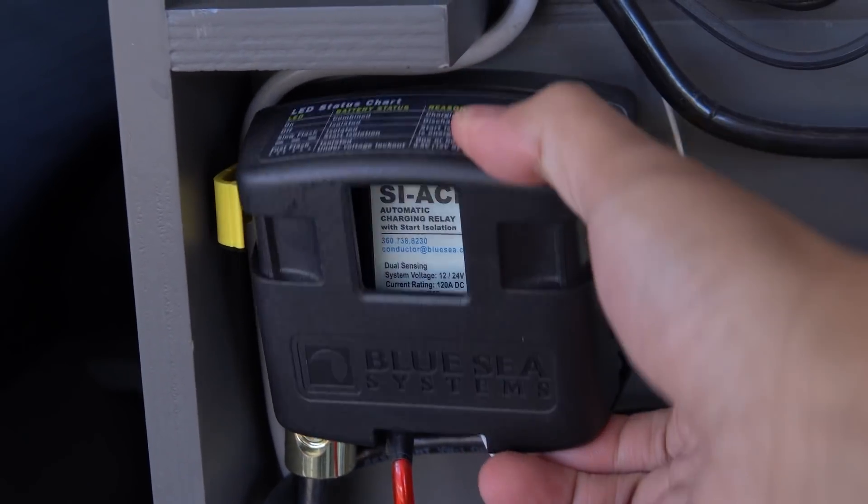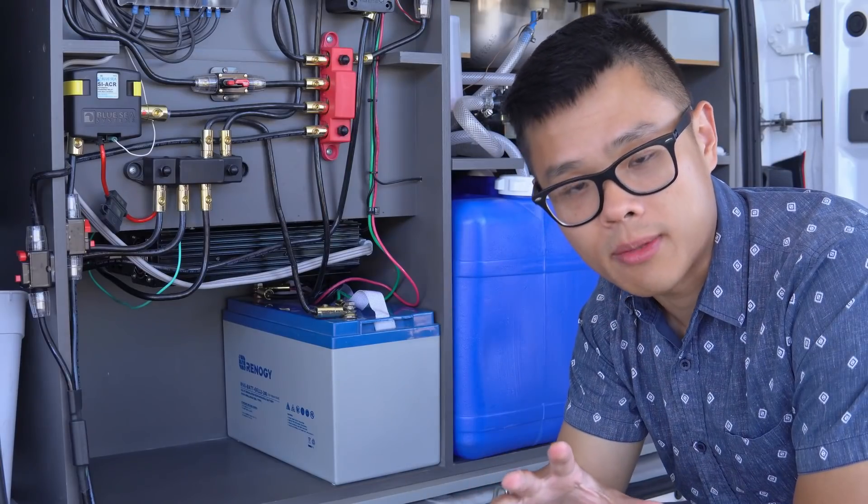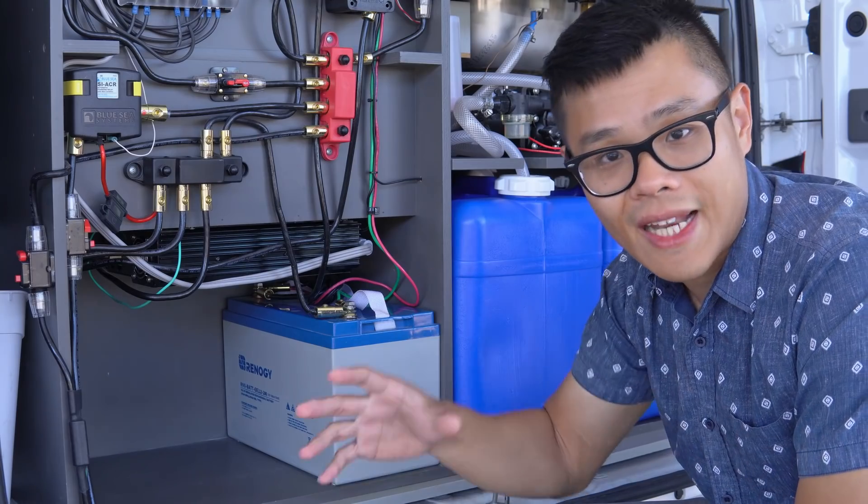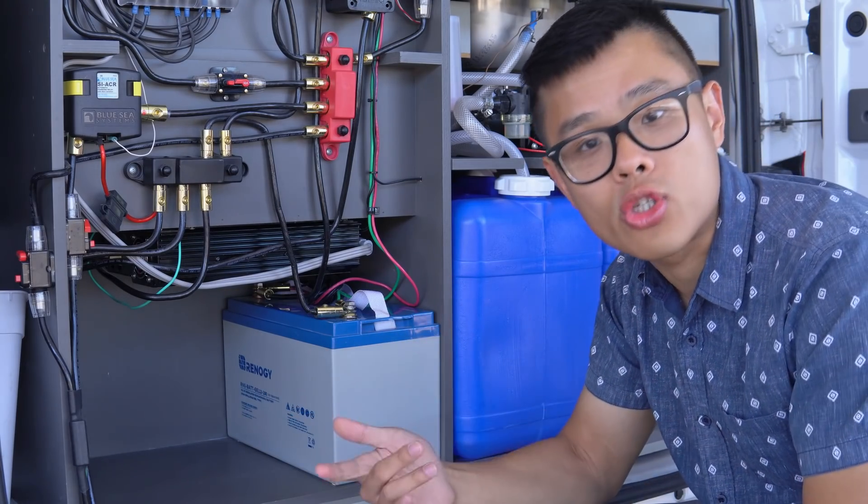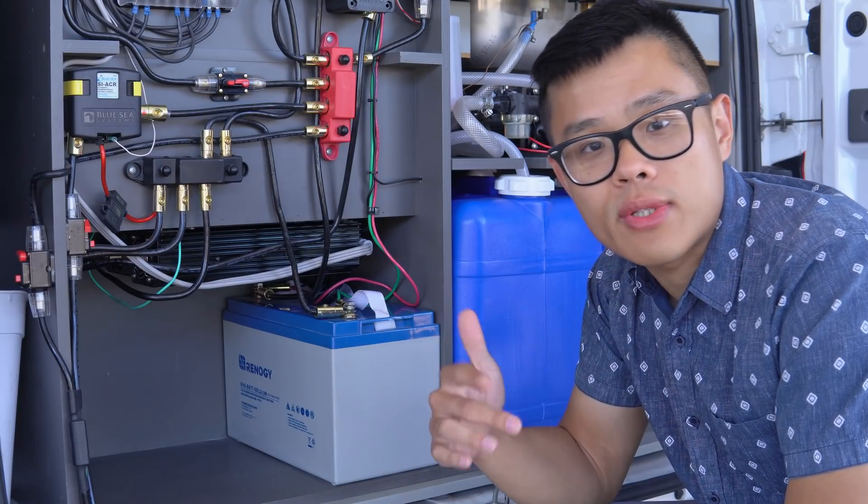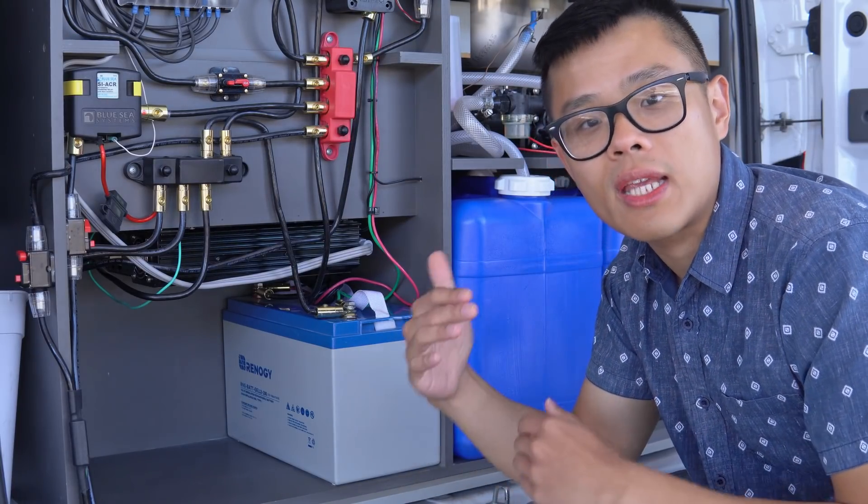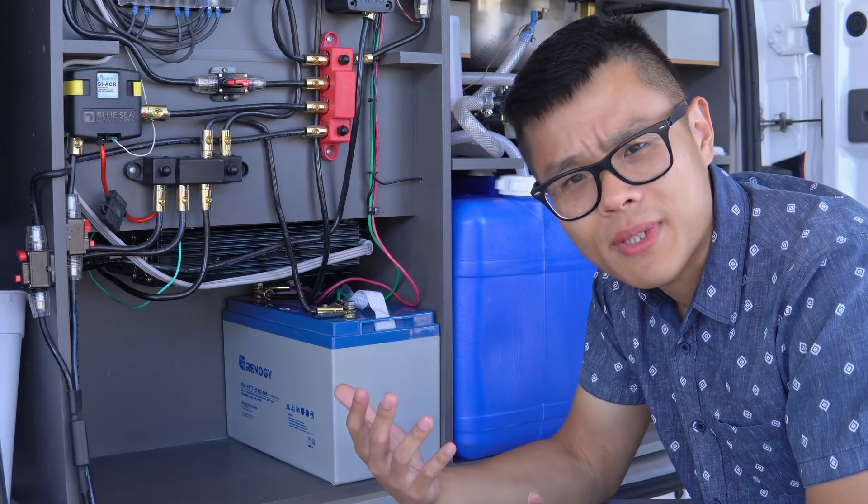It reads the voltage on both batteries and knows when to connect the two. There's actually a lot of issues with this method. Your starter battery is lead-acid and should only be connected to other lead-acid batteries like AGM or gel. It won't be compatible with lithium. Another issue is that newer alternators will cut off charging even before your house battery is full. It will stop when your house battery is around 80%.